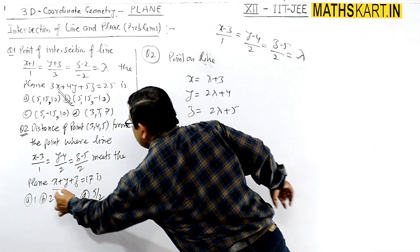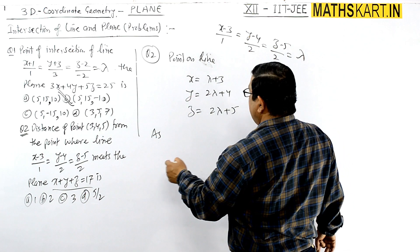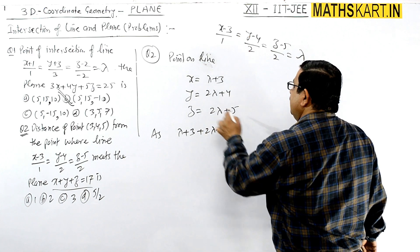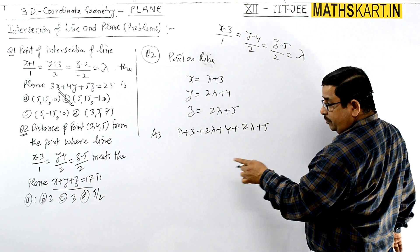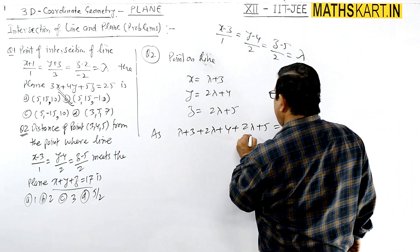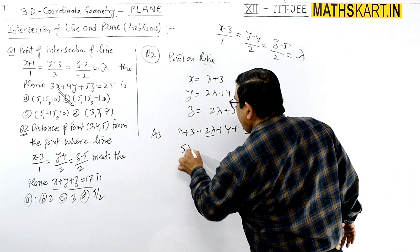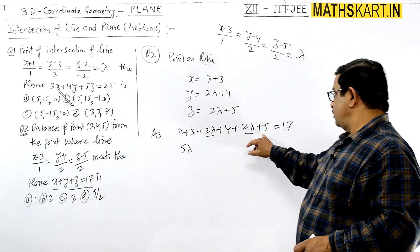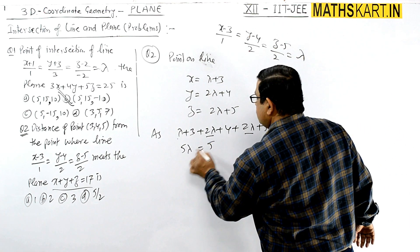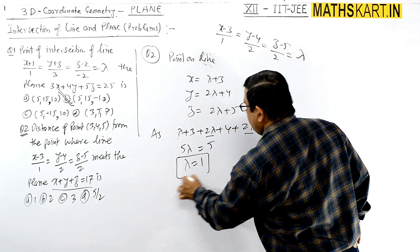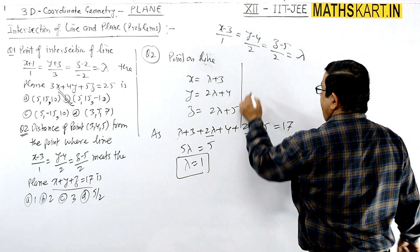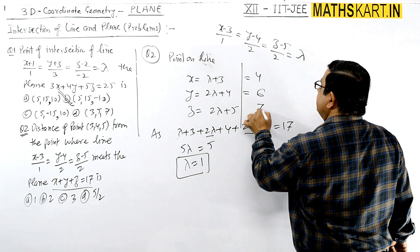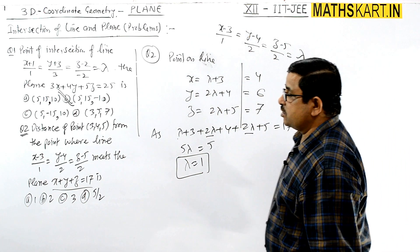Substituting into the plane equation x + y + z = 17: (λ + 3) + (2λ + 4) + (2λ + 5) = 17, which gives 5λ + 12 = 17, so 5λ = 5 and λ = 1. Therefore the intersection point Q is (4, 6, 7).